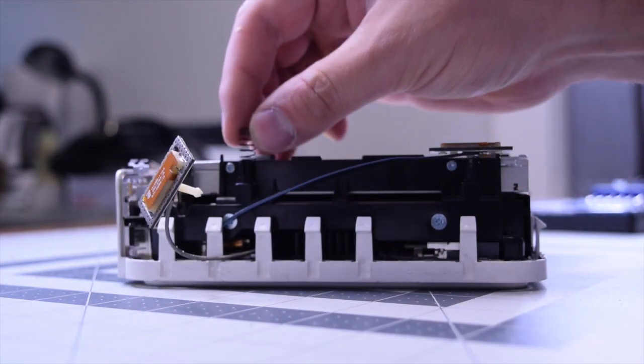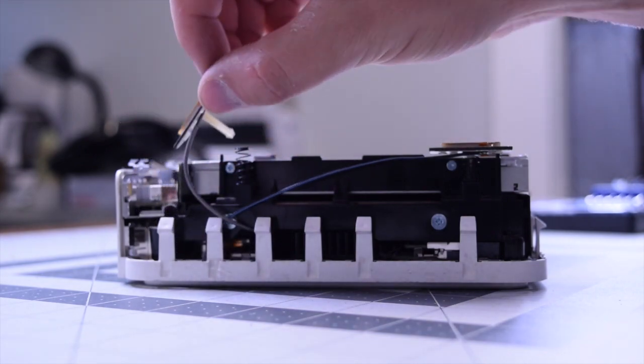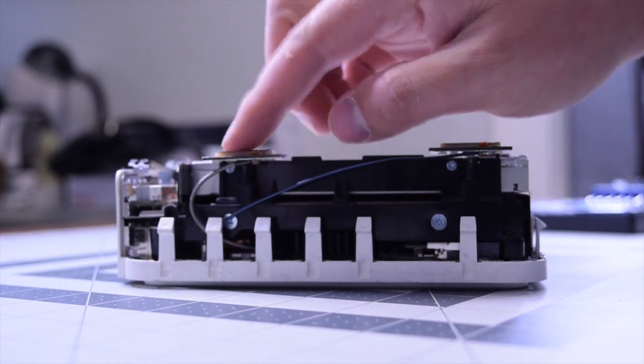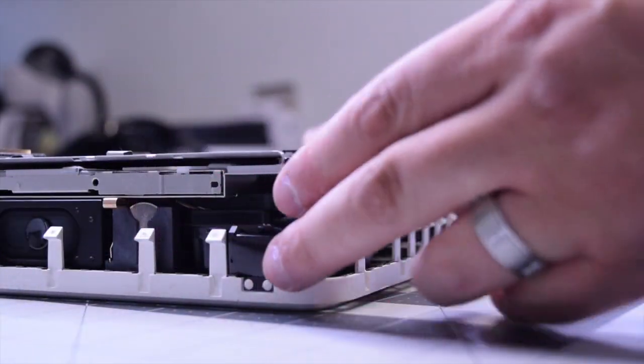Now place back the spring and the gray antenna and that should click right in as well. Let's flip it around and the third and final antenna.